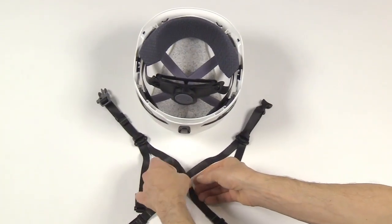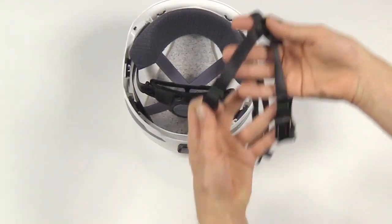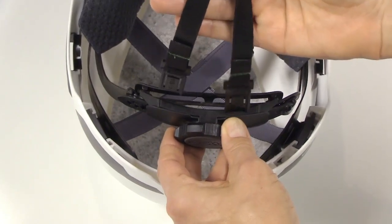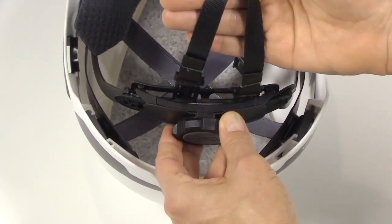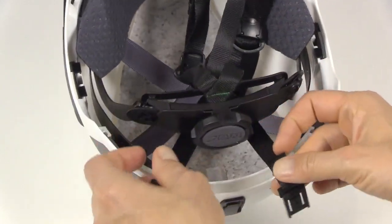Start with the rear clips of the chin strap and thread them in between the ratchet and the comfort pad as shown, ensuring that the chin strap does not get twisted.